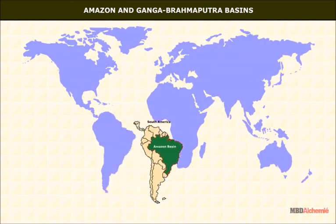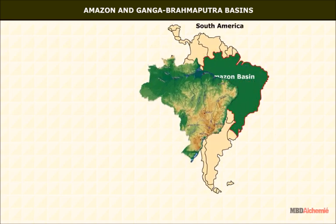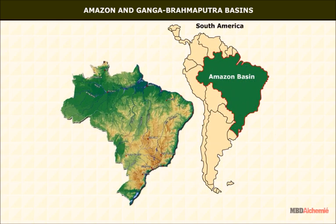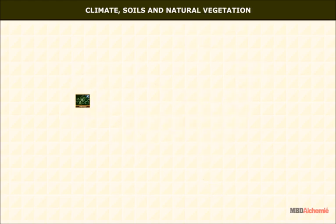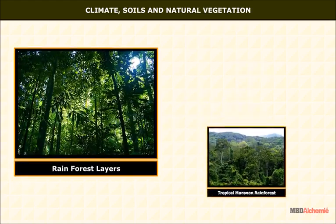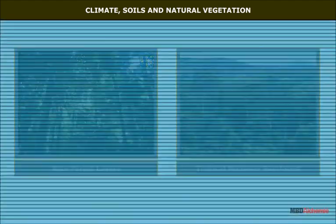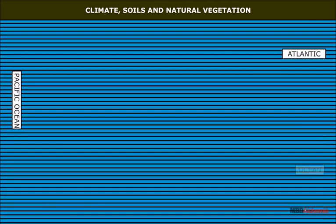Another region in the given latitude zone is the Amazon basin in South America. Regarding climate, soils and natural vegetation — the world's largest vegetation zone, that of rain forests, is found in the Amazon basin.